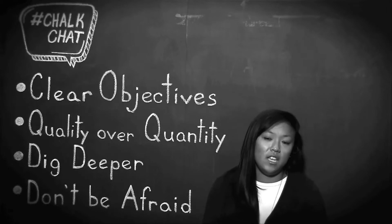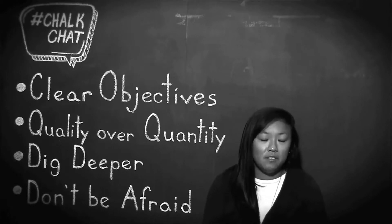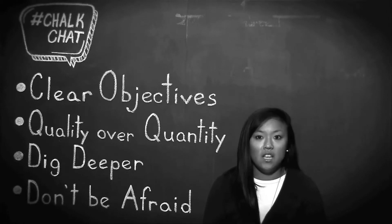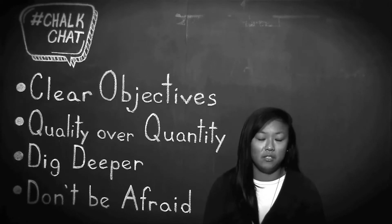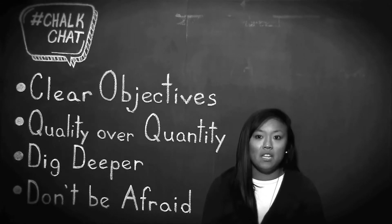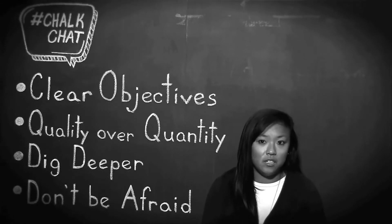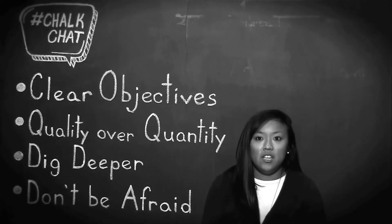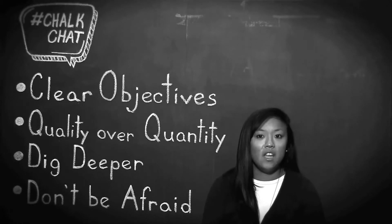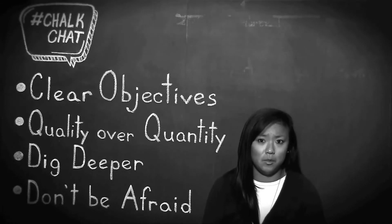Quality over quantity. Having clear research objectives should help with my next point, which is quality over quantity. Sometimes when conducting social listening research, it's necessary to lose some conversations that aren't as relevant to your research objectives in order to really look closely at the information that you're interested in. It's going to be more valuable to the end user if the research is able to look at a small number of highly relevant, highly interesting social media posts, than if it incorporates thousands of posts that aren't even really addressing the research objectives.